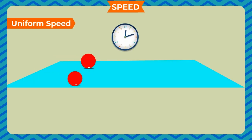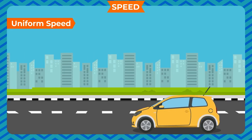Uniform Speed: A body is said to be moving with uniform speed if it covers equal distances in equal intervals of time. For example, a car moving on a highway.